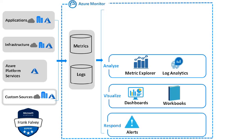Next up we have the response section: alerts, action rules, groups, and auto scale. In addition to allowing you to interactively analyze monitoring data, an effective monitoring solution must be able to proactively respond to critical conditions identified in the data it collects. This could be sending a text or an email to an administrator responsible for investigating issues, or launching an automated process that attempts to correct the error condition. Alerts in Azure Monitor proactively notify of critical conditions and potentially attempt to take corrective action.